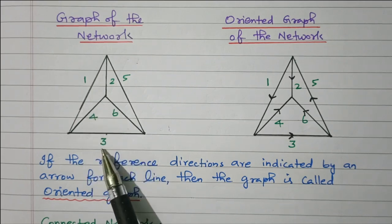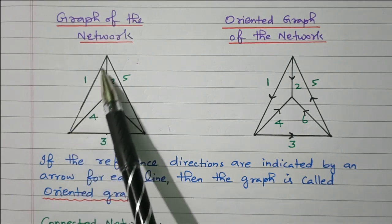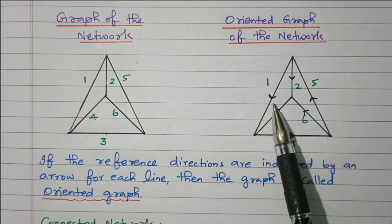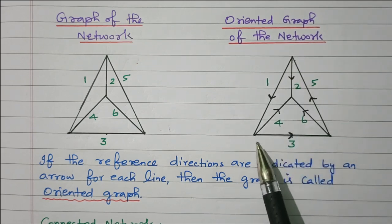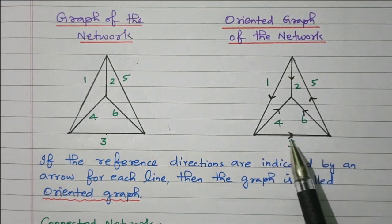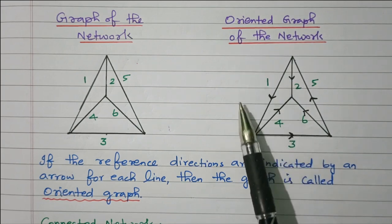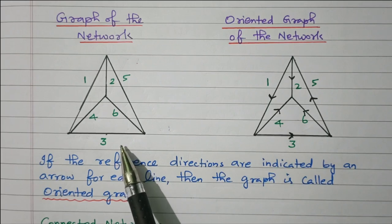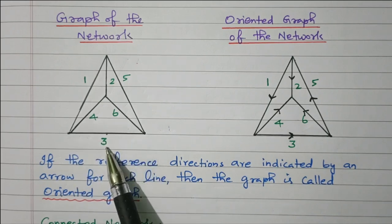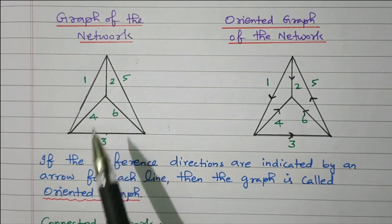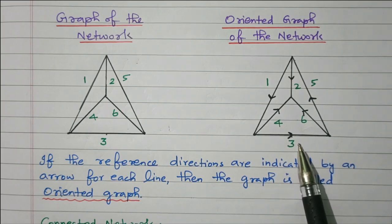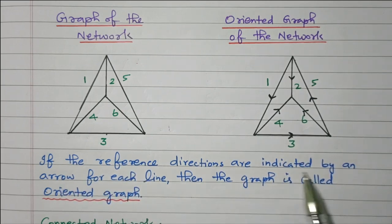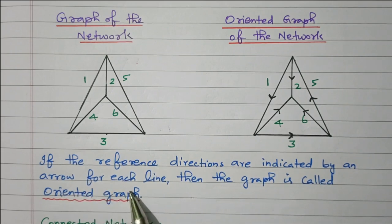The elements are replaced by lines and numbers are given for easy identification — this is called a graph of a network. We can know how many elements are there. If directions are also given — indicating the direction of current flow — then it is called an oriented graph of a network. If reference directions are indicated on each line, the graph is called an oriented graph.